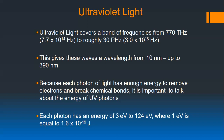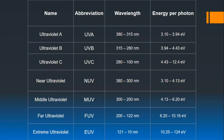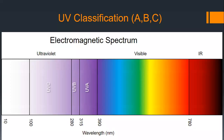Ultraviolet light starts at 390 nanometers and by our definition goes up to 10 nanometers. We can classify it as UVA, UVB, and UVC, or as near, middle, far, and extreme. Here's what it looks like on the spectrum — visible is here, then UVA, UVB, UVC are parts of the ultraviolet spectrum close to the visible. Beyond that is typically considered vacuum ultraviolet.